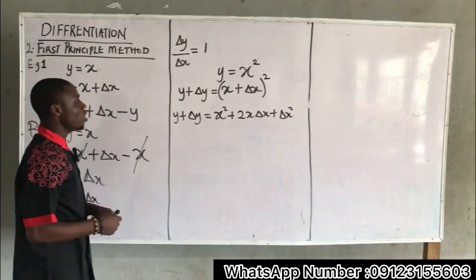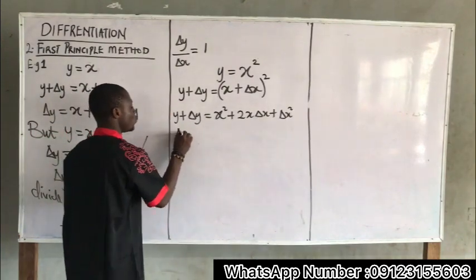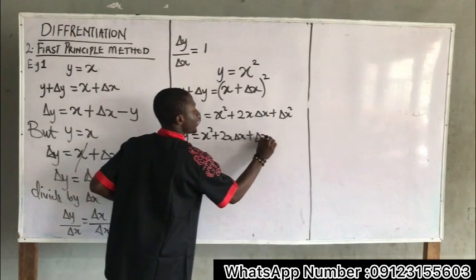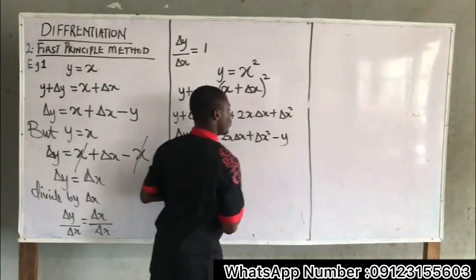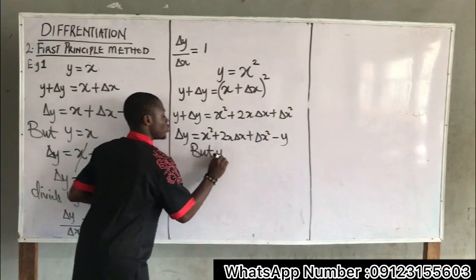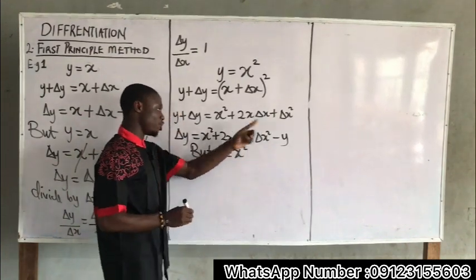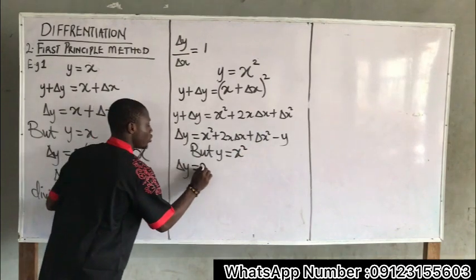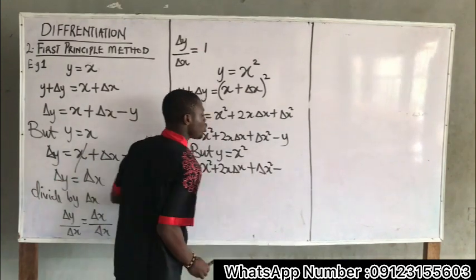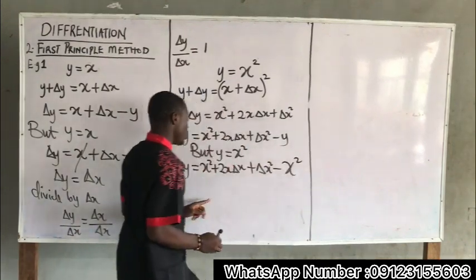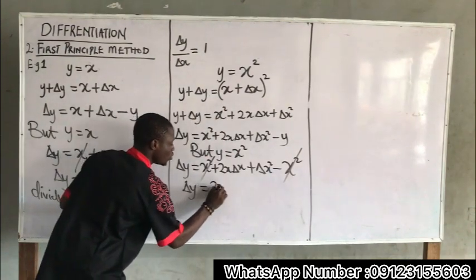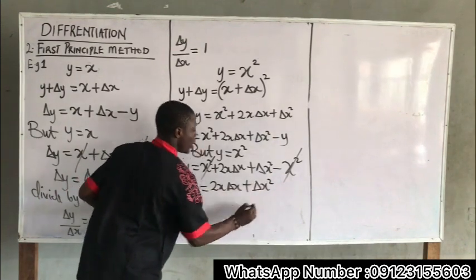Proceeding from y plus Δy equals x squared plus 2x·Δx plus Δx squared: taking y to the other side gives Δy equals x squared plus 2x·Δx plus Δx squared minus y. Since y equals x squared, substitute: Δy equals x squared plus 2x·Δx plus Δx squared minus x squared. The x squared terms cancel, leaving Δy equals 2x·Δx plus Δx squared.